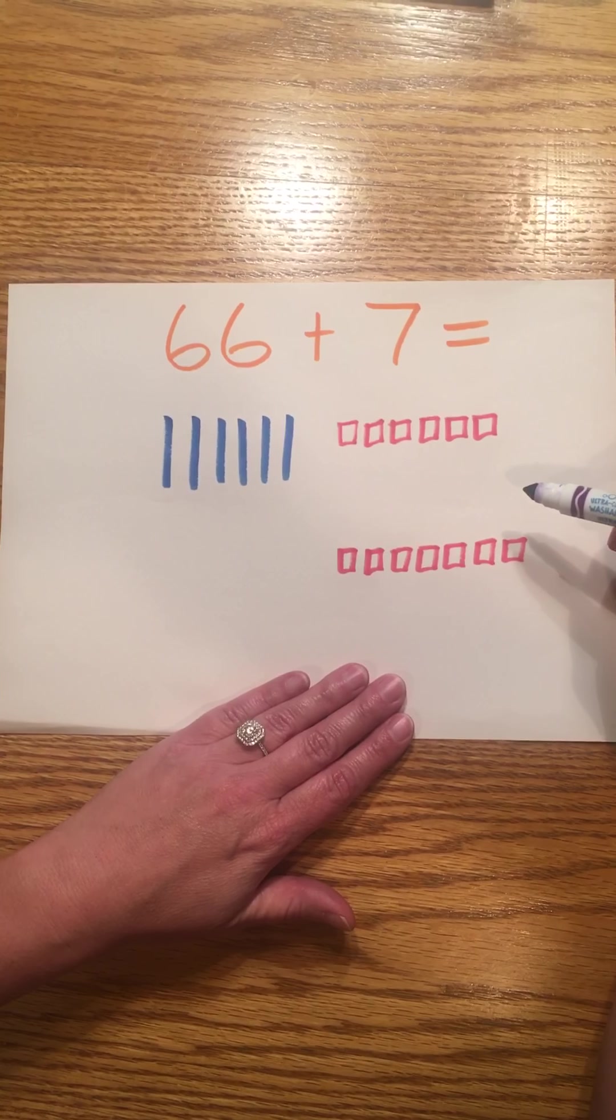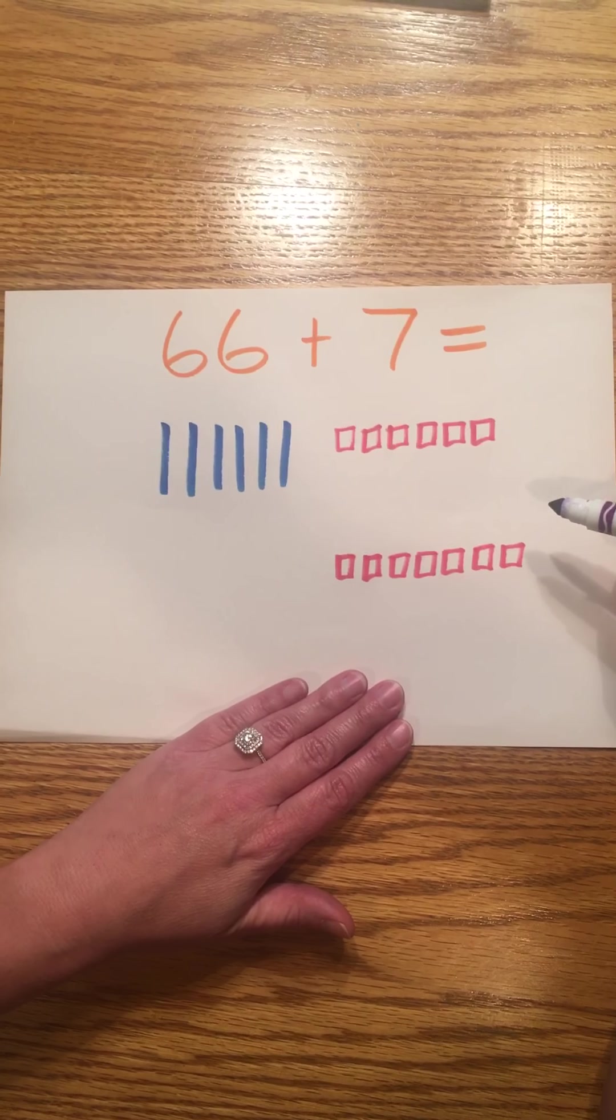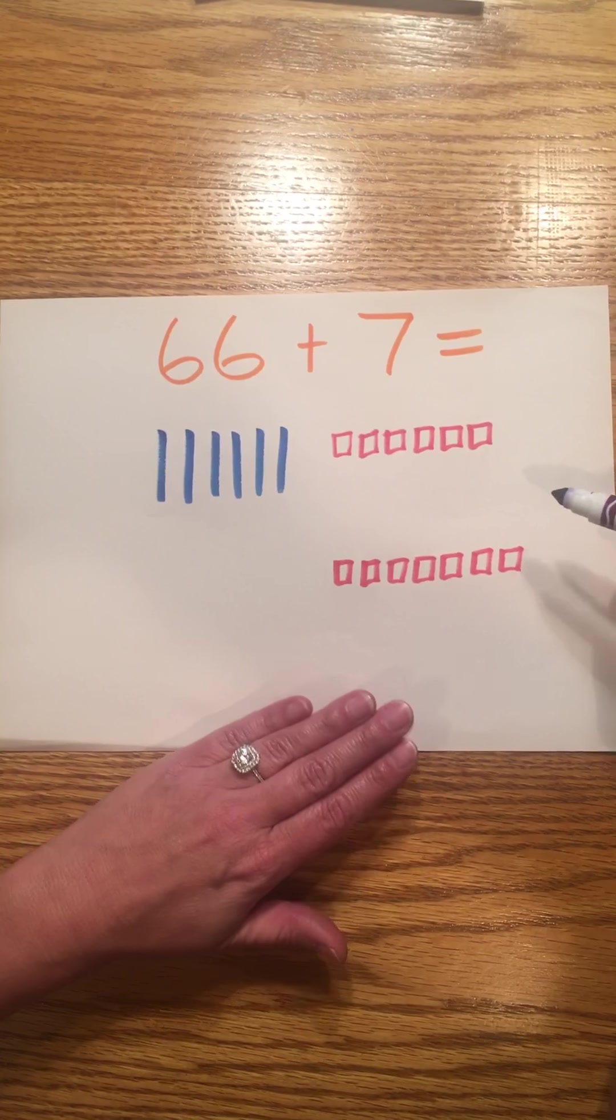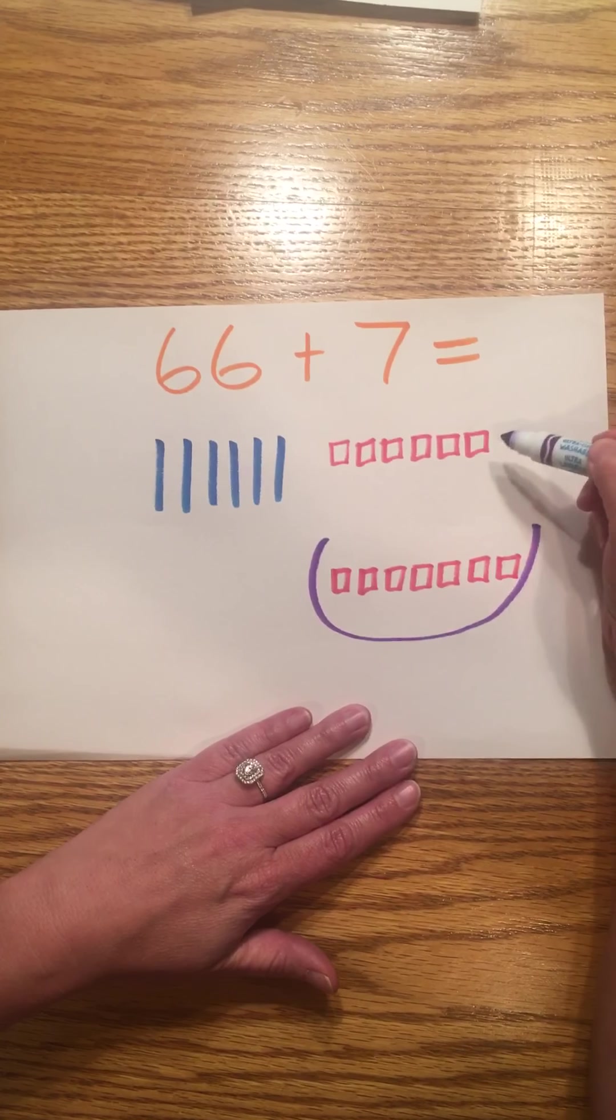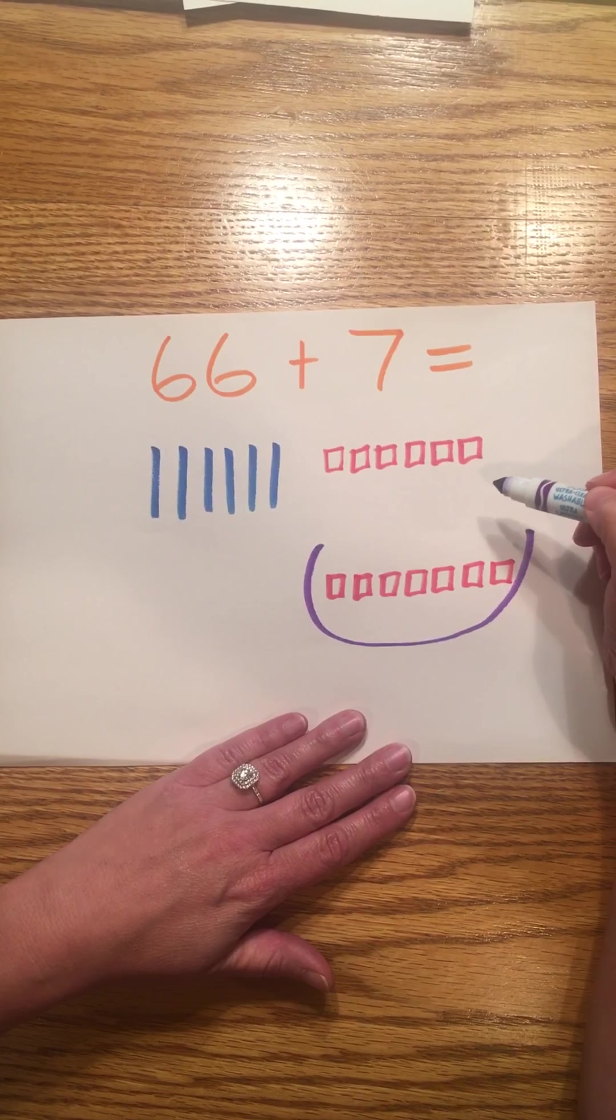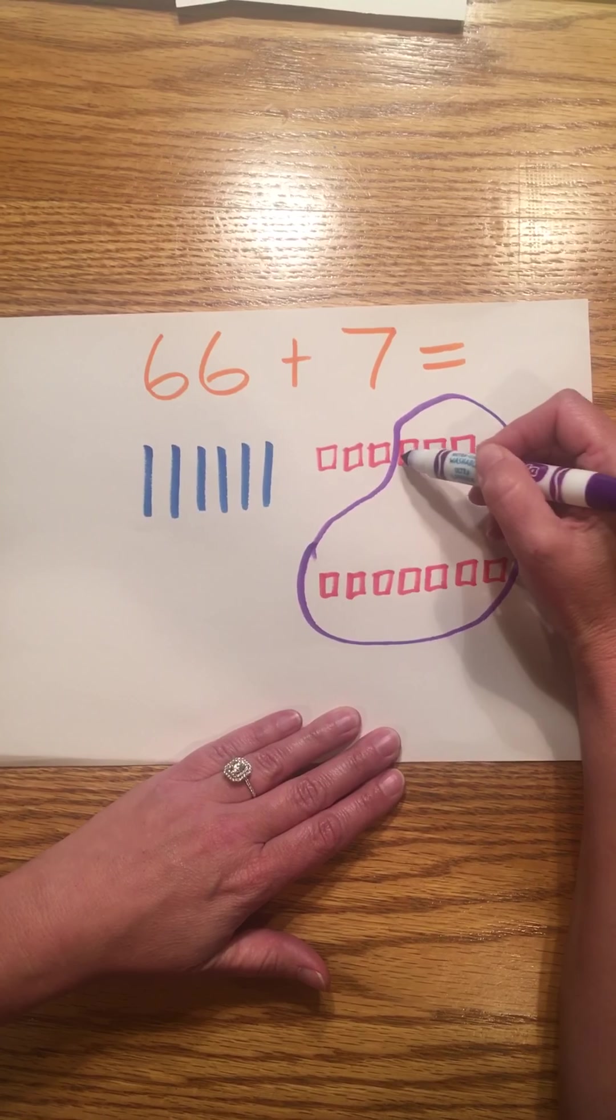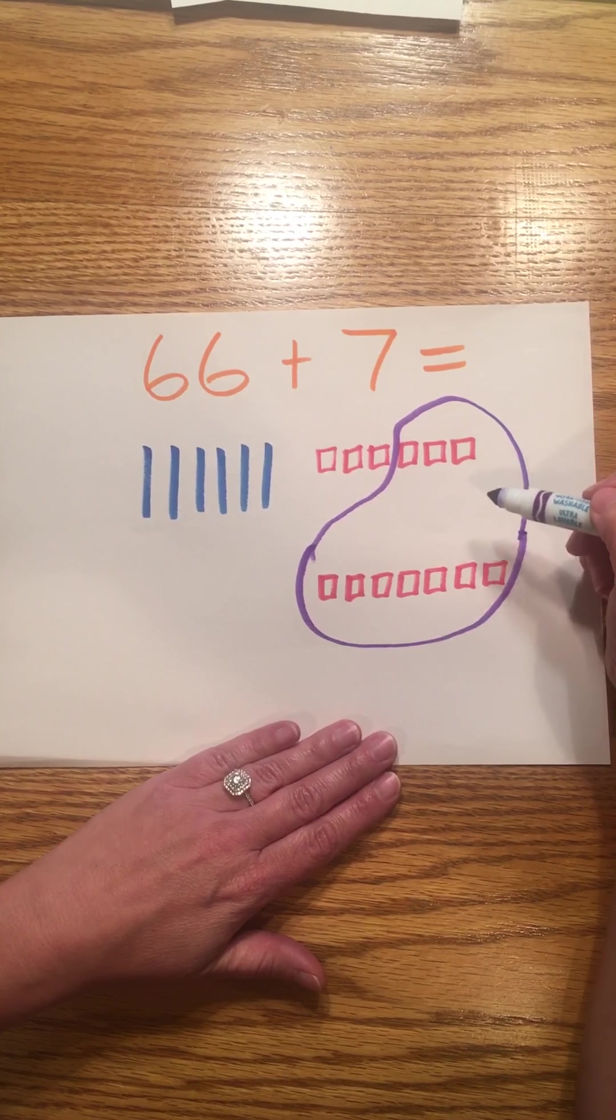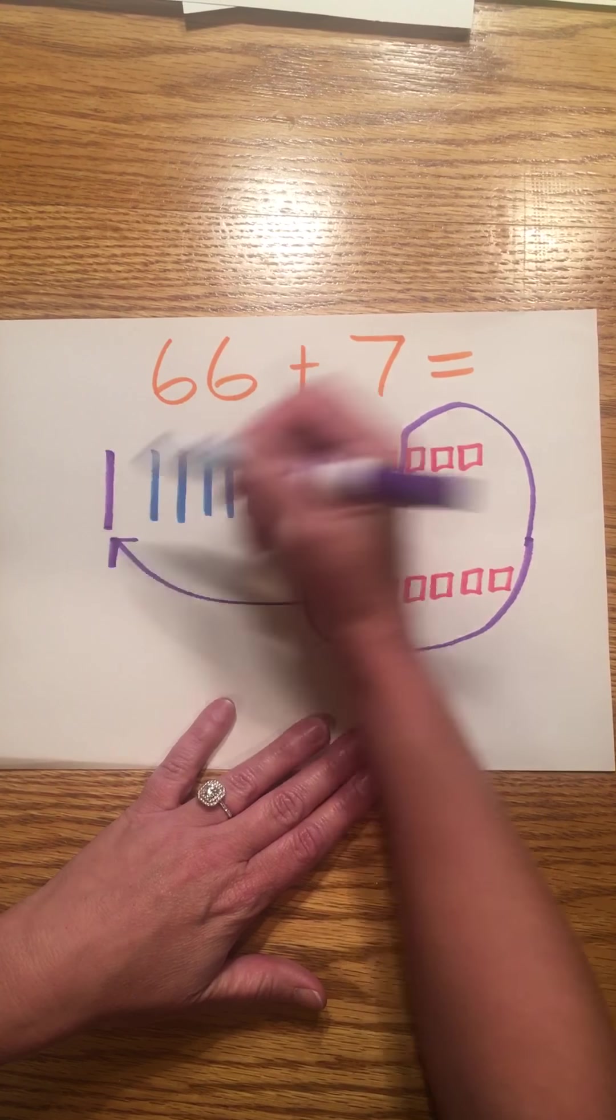When your ones place is over nine, you need to regroup. So in order to regroup, I need to make a group of ten ones. So this is seven, and I will pick three ones from here to make a ten. So seven, eight, nine, ten.